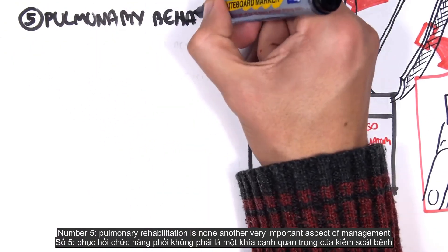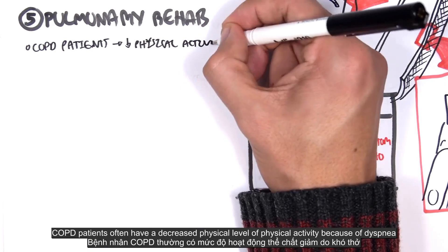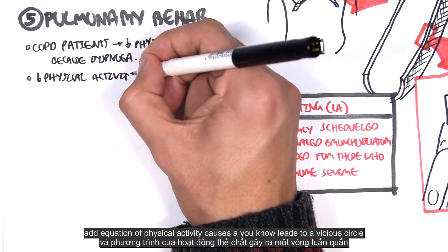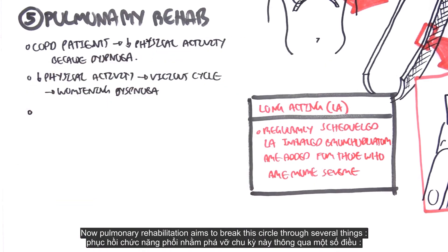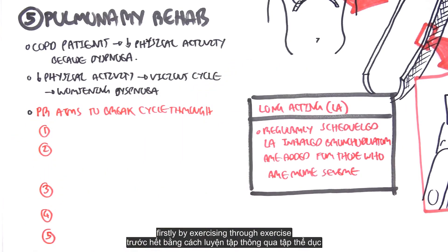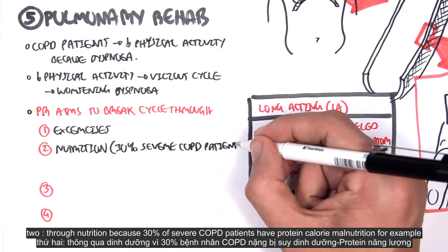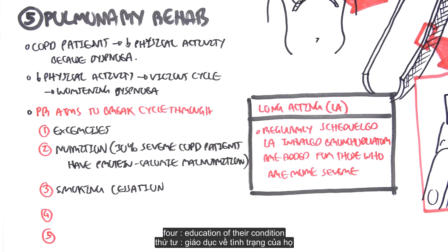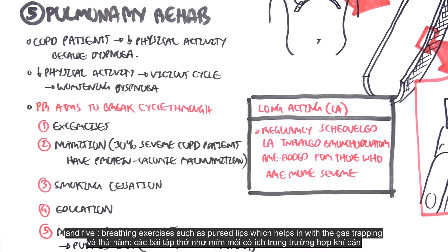Number five: pulmonary rehabilitation is another very important aspect of management. COPD patients often have a decreased level of physical activity because of dyspnea, which leads to a vicious cycle of worsening dyspnea and muscle loss. Pulmonary rehabilitation aims to break this cycle through: exercise, nutrition — since 30 percent of severe COPD patients have protein-calorie malnutrition — smoking cessation, education about their condition, and breathing exercises such as pursed lips, which help with gas trapping.